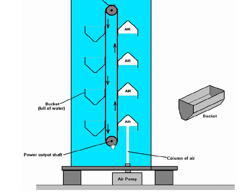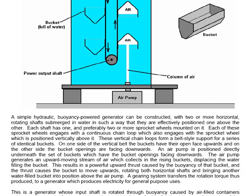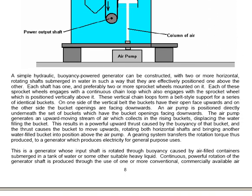You can have one or more rotating shafts submerged in water in such a way that they're effectively positioned one above the other. Each shaft has one and preferably two or more sprocket wheels mounted on it. Each of these sprocket wheels engages with a continuous chain loop, which also engages with the sprocket of the wheel which is positioned vertically above it. These vertical chain loops form a belt-style support for a series of identical buckets. On one side of the vertical belt, the buckets have their open face upwards, and on the other side, the bucket openings are facing downwards.